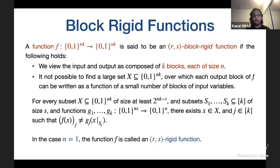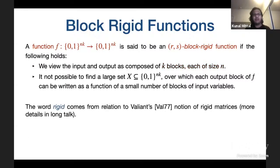In the case n equals 1, we call such functions (r, s) rigid functions rather than block rigid. The word rigid comes from Valiant's notion of rigid matrices. The notion of rigid matrices was introduced by Valiant to show lower bounds against logarithmic depth and linear size arithmetic circuits, and the notion of rigid functions gives lower bounds against general Boolean circuits.